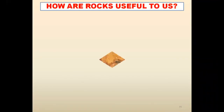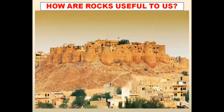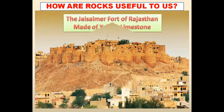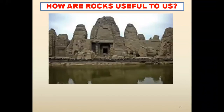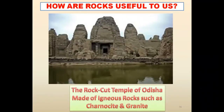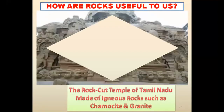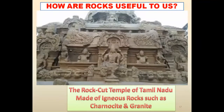Can you identify the next image? That is Jaisalmer Fort of Rajasthan, and which stone is it made up of? Yellow limestone — that is also one of the uses of rocks. Can you identify this image? Yes — the rock-cut temple of Odisha, made of igneous rock such as charnockite and granite. That is also one of the uses of rock. Rock-cut temple of Tamil Nadu also — made of charnockite and granite, which is igneous rock.